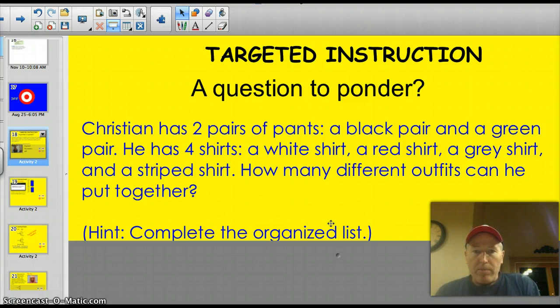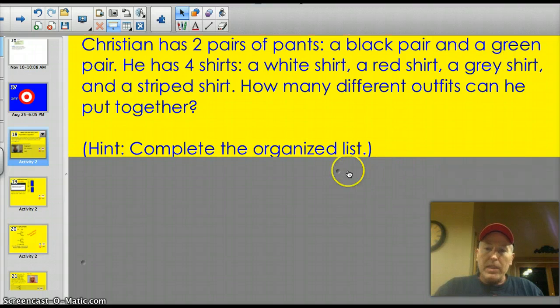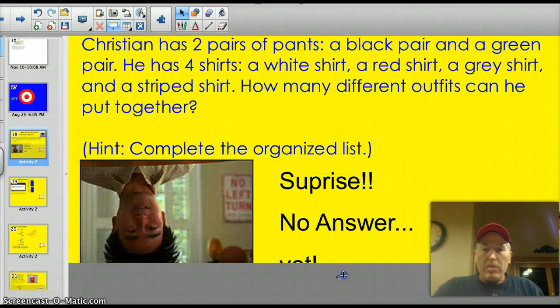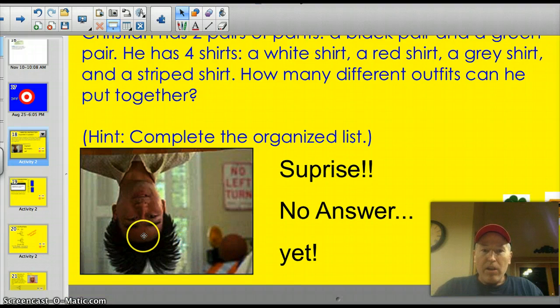Christian has two pairs of pants: a black pair and a green pair. He has four shirts: a white shirt, a red shirt, a gray shirt, and a striped shirt. How many different outfits can he put together? Well, hint, you need to make an organized list to solve this problem. All right, why don't you think about it? No, you're not going to think about it. Let's get serious here. You just want to see what's underneath here. Well, there's no surprise, not yet. But I did like this picture of this guy hanging upside down. And he kind of looks like me when I was a kid, when I had hair. Except for, I didn't have the serious unibrow working like he does. He needs a little trim.